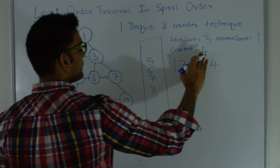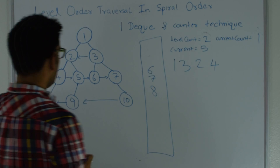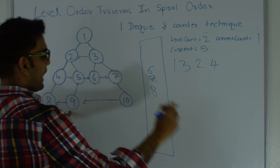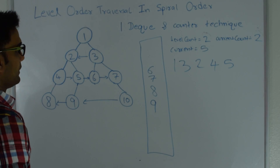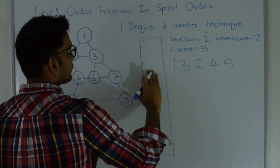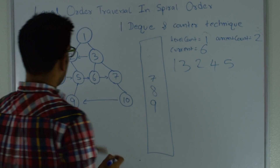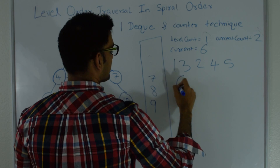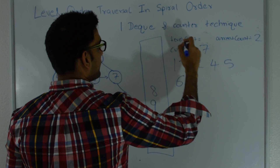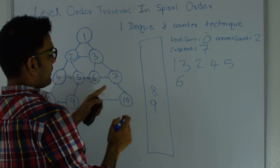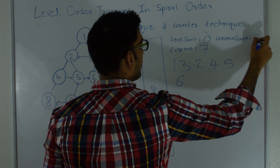Pop again — current becomes 6; level count becomes 1; no children; print 6. Pop again — current becomes 7; level count becomes 0. 7 has no left child but has a right child added to the bottom; current count becomes 3; print 7. As soon as level count becomes 0 it takes current count's value: level count becomes 3, current count becomes 0, and I start looking from the bottom of the queue.